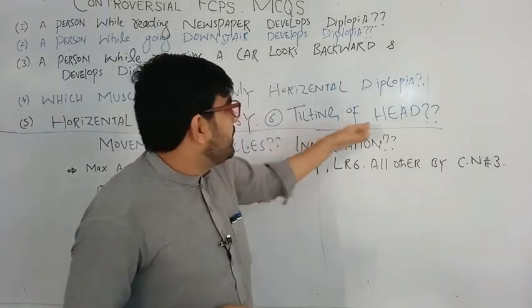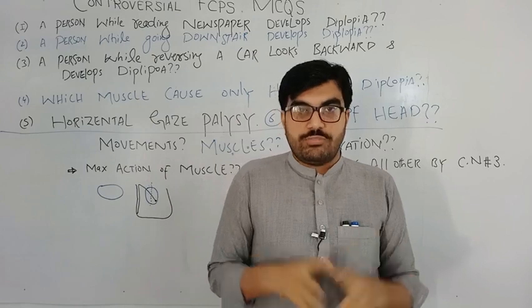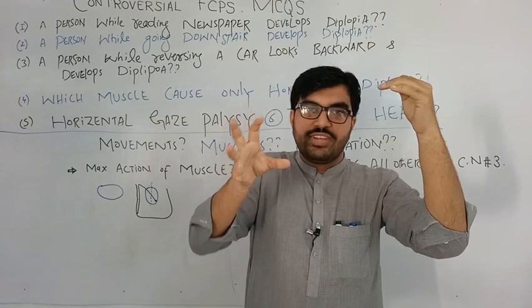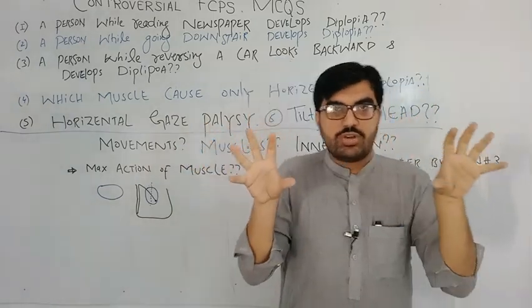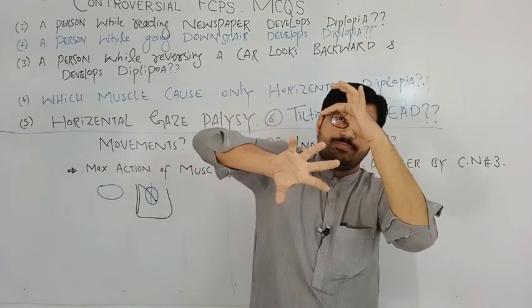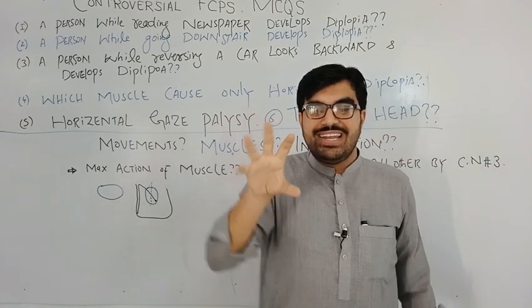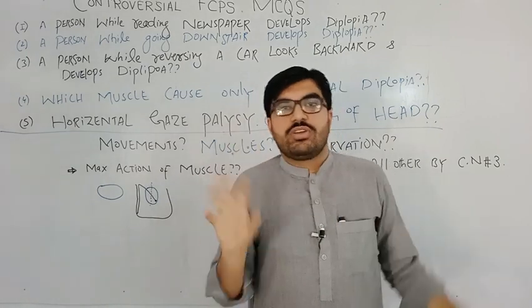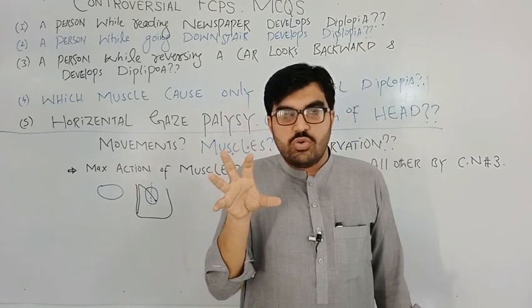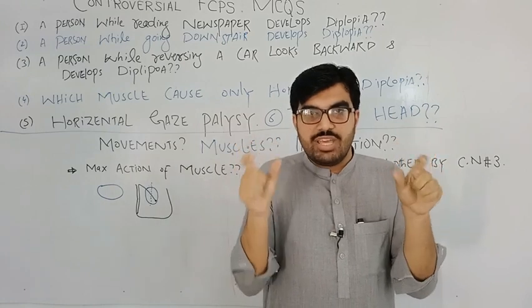The superior oblique is the intorter of the eyeball — it rotates the eyeball inward. The intorsion of the eyeball is normally cancelled by the extorsion of the eyeball, so normally the eyeball lies in the median position with no intorsion and no extorsion. There is no head tilt because the images form on the central retina normally.